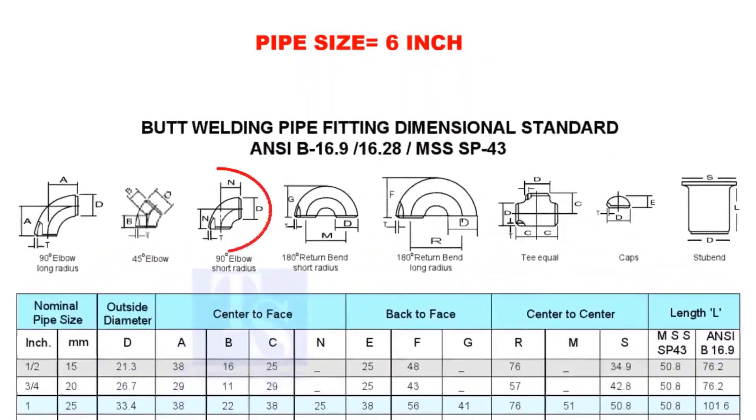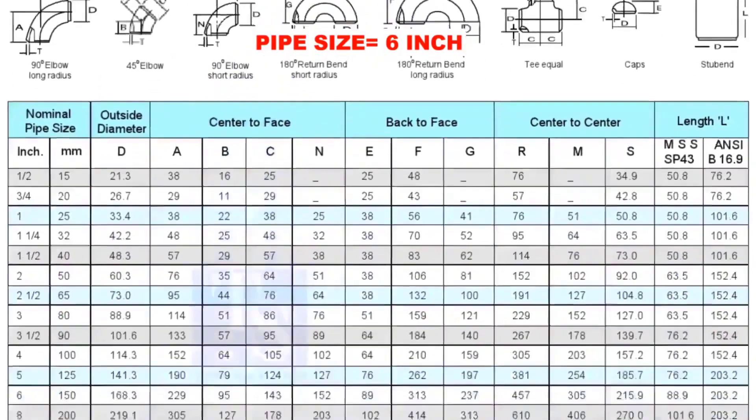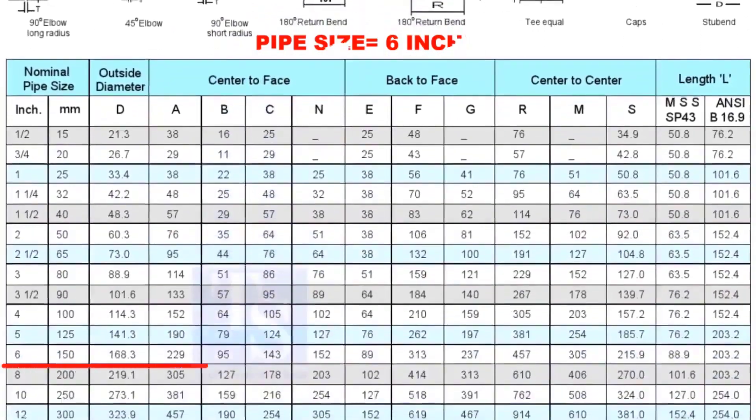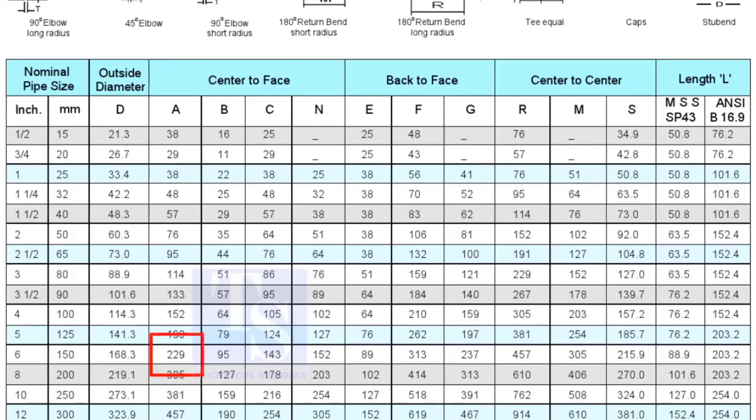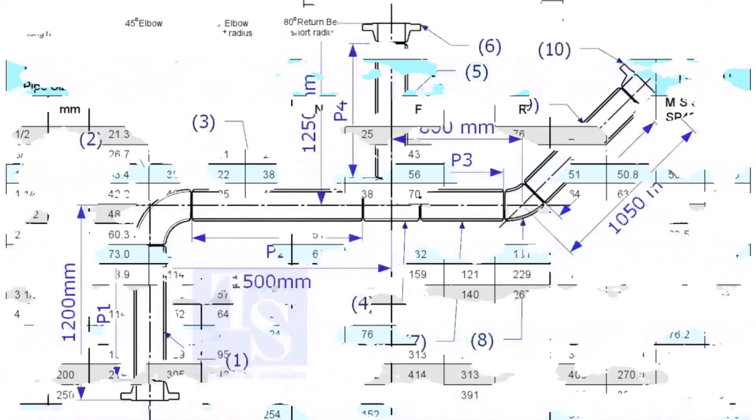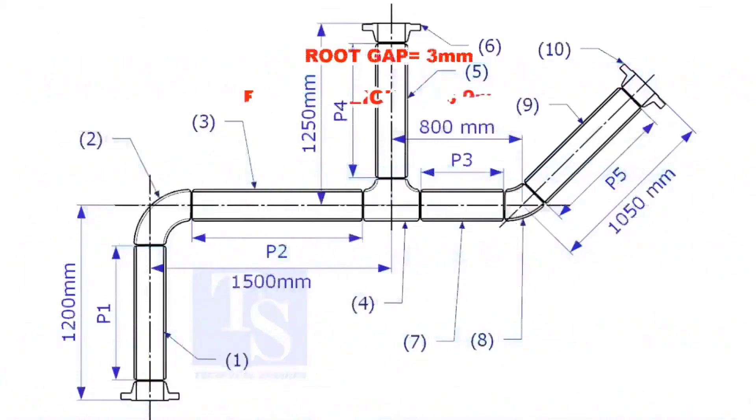Check the takeoff length of the elbow. It is 229mm. Assume the root gap is 3mm.